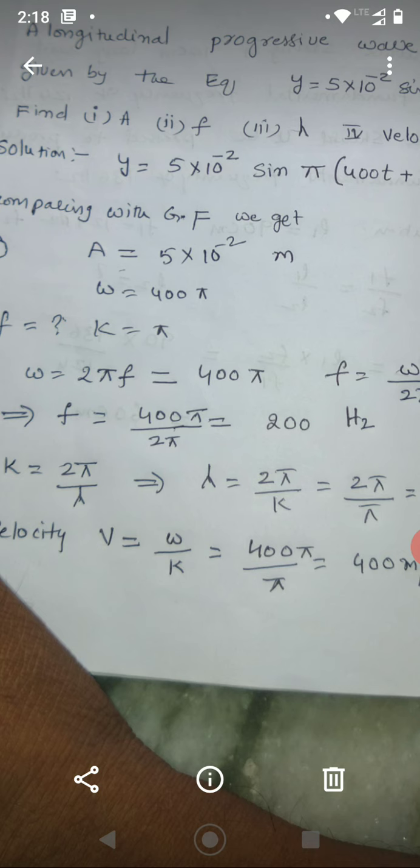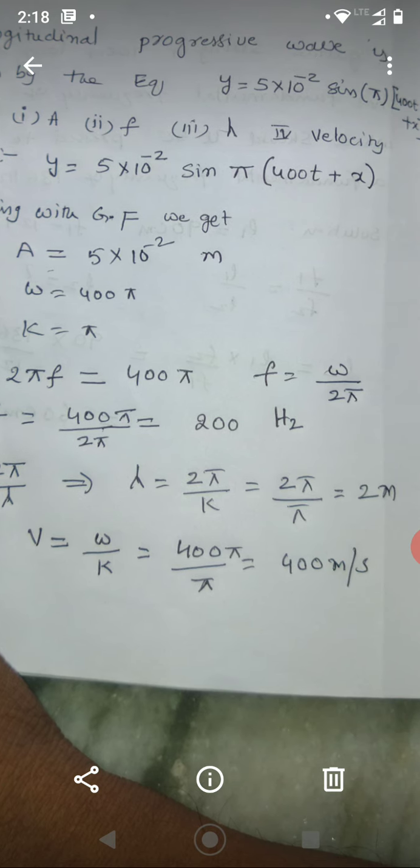Similarly, wave velocity. Wave velocity is given by omega by k. 400 pi by pi. Pi gets cancelled, 400. And velocity units are meters per second. Students, continuously follow my videos. That will help you much. You put your thought-provoking questions answer in our group. Thank you.